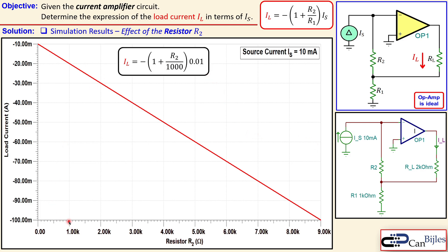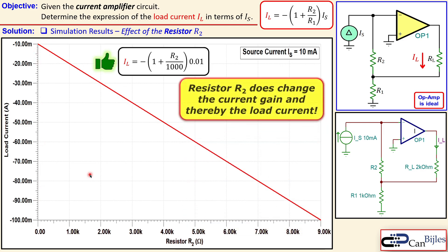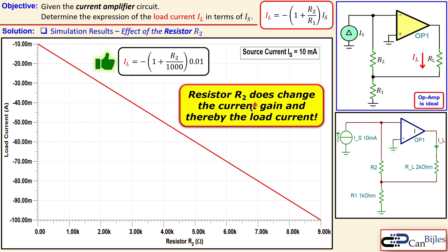At R2 = 1 kΩ, the calculation gives −(1 + 1000/1000) × 0.01 = −20 mA. At R2 = 9 kΩ, it gives −(1 + 9000/1000) × 0.01 = −100 mA. There is clearly a nice linear relationship, confirming that resistor R2 changes the current gain and thereby the load current.